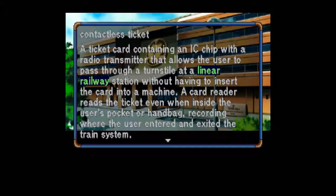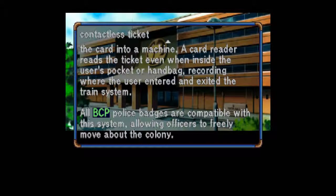Contactless Ticket: A ticket card containing an IC chip with a radio transmitter that allows the user to pass through a turnstile at a linear railway station without having to insert the card into a machine. A card reader reads the ticket even when inside the user's pocket or handbag, recording where the user entered and exited the train system. All BCP police badges are compatible with this system, allowing officers to freely move about the colony.